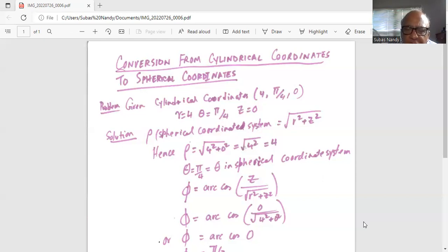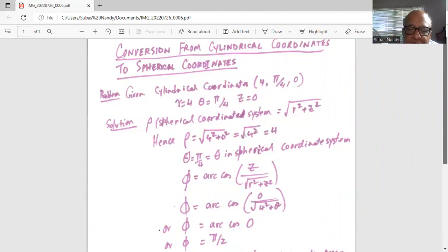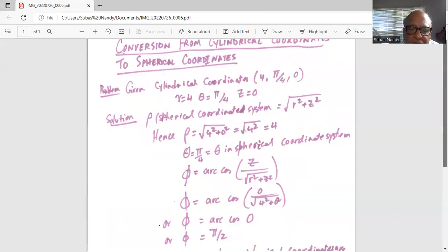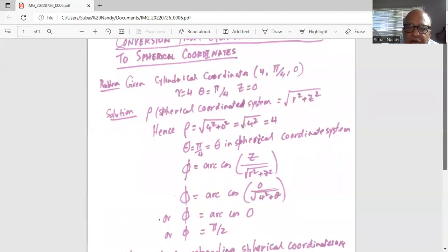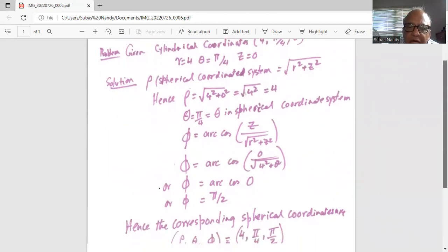And phi in spherical coordinate system is arc cosine z divided by square root of r square plus z square. That is phi equal to arc cosine 0 divided by square root of 4 square plus 0 square. Now that is phi is equal to arc cosine 0, which means phi is equal to pi by 2.